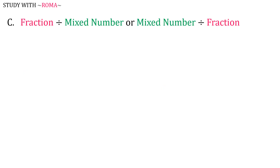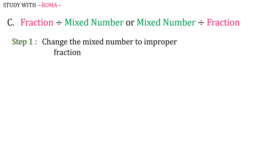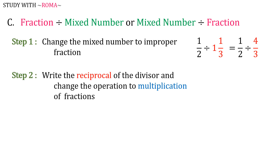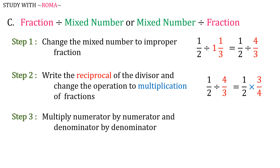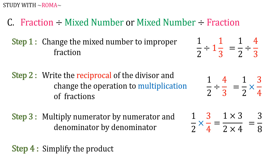Now let's have fraction divided by mixed number or mixed number divided by fraction. Step 1: change the mixed number to an improper fraction. 1 half divided by 1 and 1 third is now 1 half divided by 4 over 3. Step 2: write the reciprocal of the divisor and change the operation to multiplication of fractions. The reciprocal of 4 over 3 is 3 over 4, so now we have 1 half times 3 over 4. Step 3: multiply numerator by numerator and denominator by denominator. So 1 times 3 all over 2 times 4 is equal to 3 over 8. Step 4: simplify the product. 3 over 8 is already in its simplest form, so 3 over 8 is our answer.